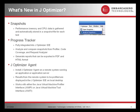The J-Optimizer agent actually allows you to install the agent on a remote system running an application or application server, and the results from that profiling are represented and displayed in the J-Optimizer IDE on your local desktop.